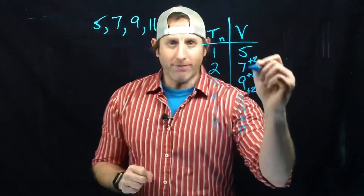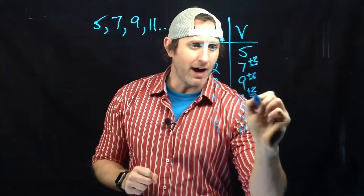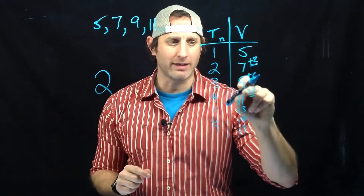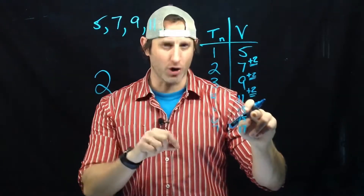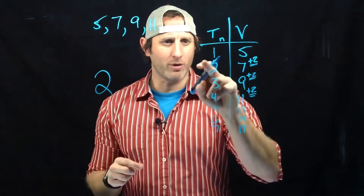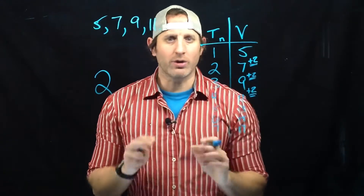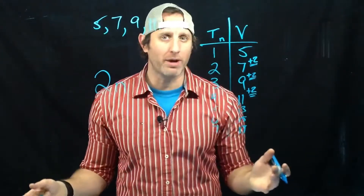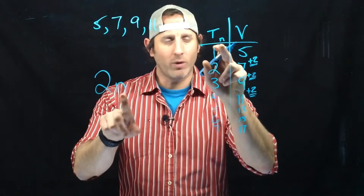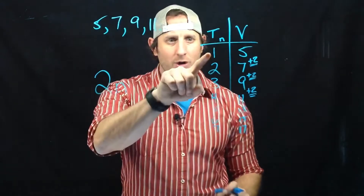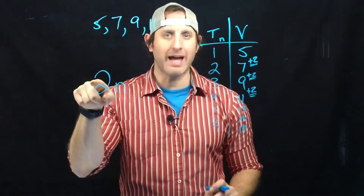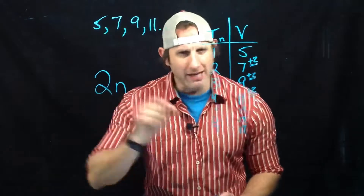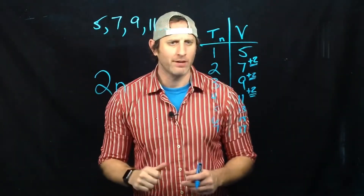When we find out that our pattern is increasing by the same amount every time, that's going to become the start of our pattern rule. We're going to write down 2, because this pattern was increasing by 2 every single term — meaning every time the term number increases by 1, we're adding 2. So the start of our pattern rule would be 2N. The variable could be N, F, T, or whatever you want to pick. What this is saying is: every time the term increases, 2 is being multiplied by the term number.